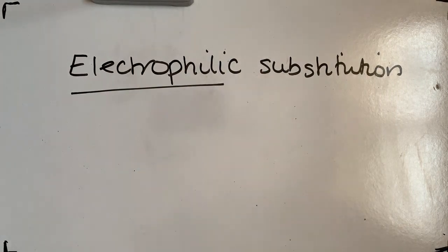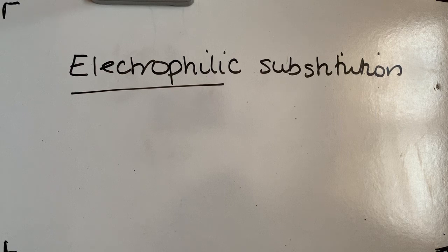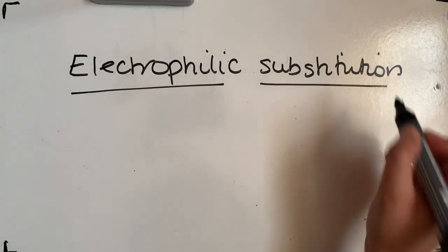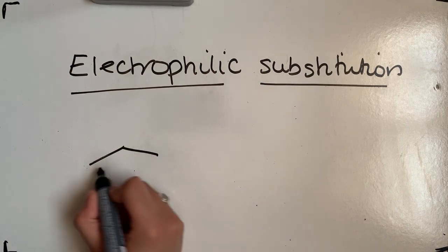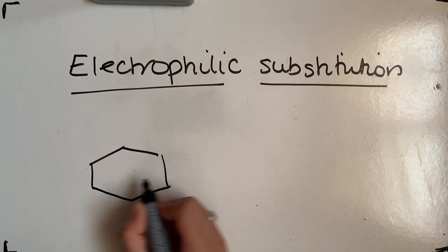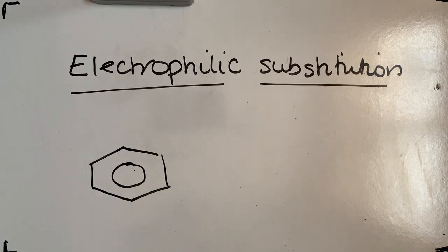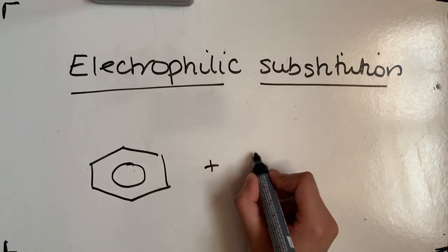Electrophilic means that an electrophile is involved — an electrophile being something that will accept a pair of electrons, so it is usually positively charged. In a substitution reaction, we're going to have two reactants and two products. The general equation is we react benzene with an electrophile.